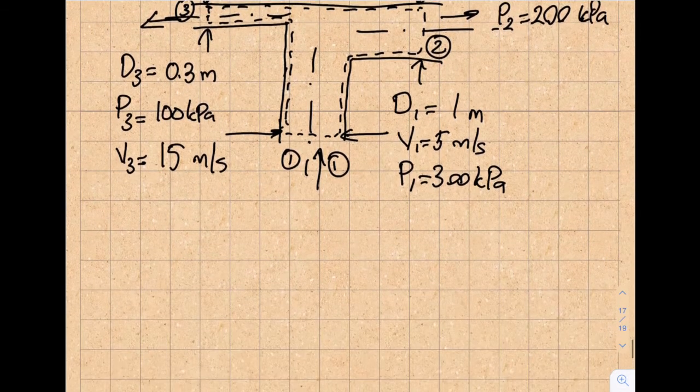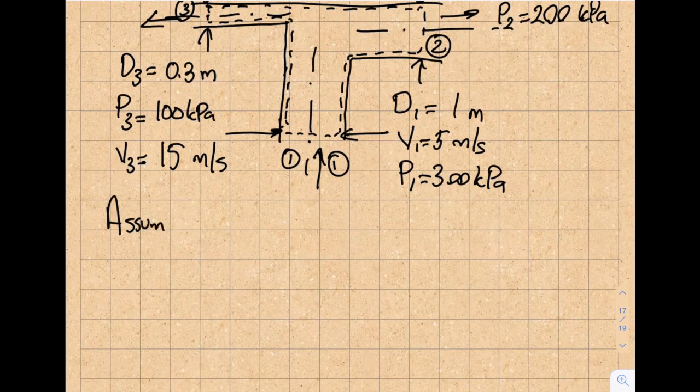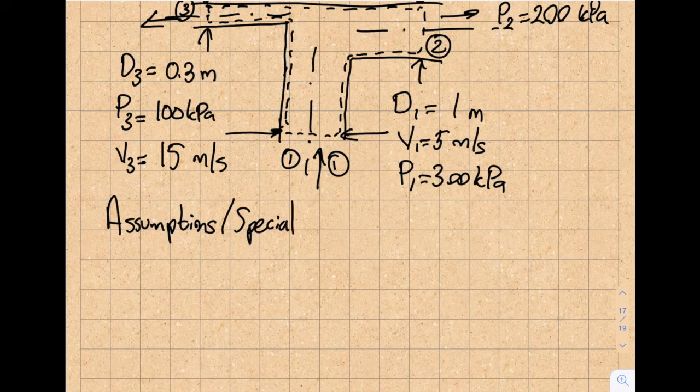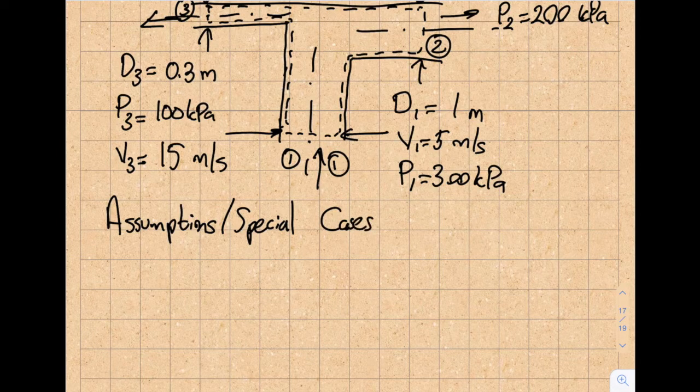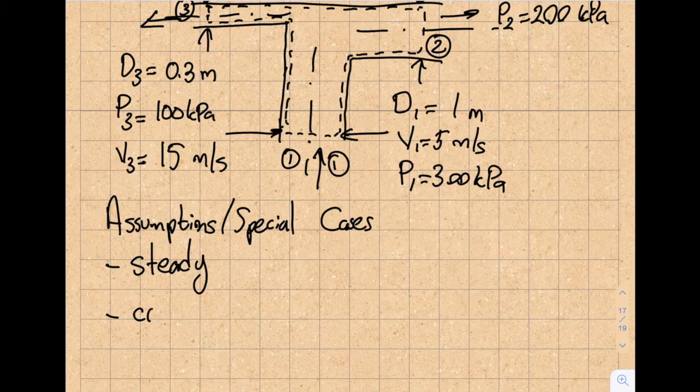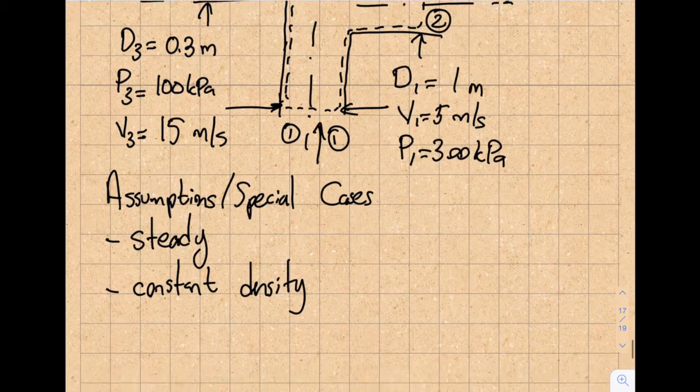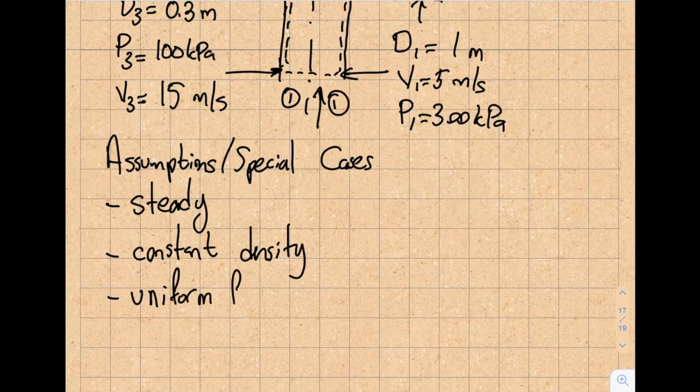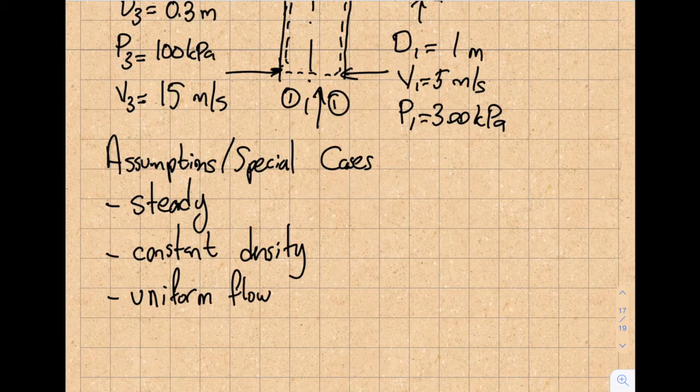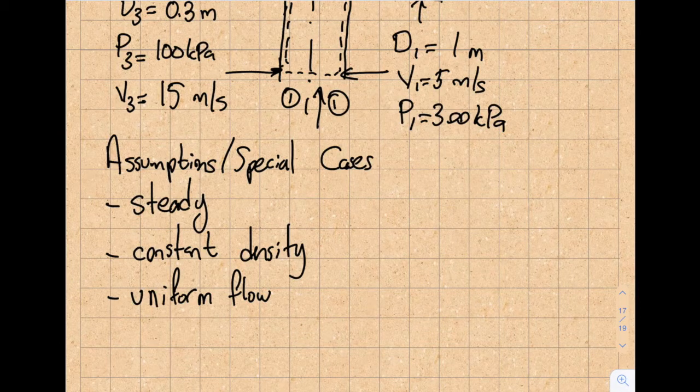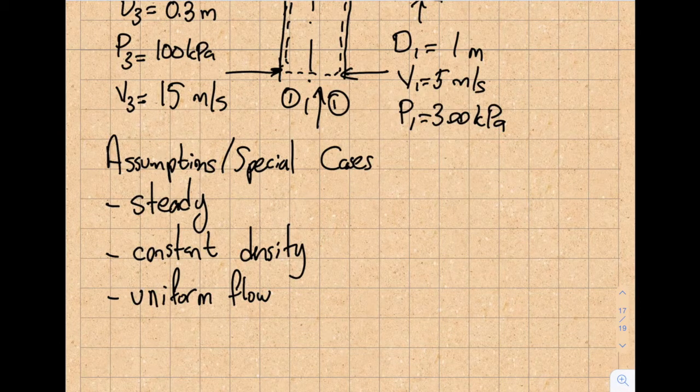The next step is to write the assumptions or special cases. Is this steady? Yes, I don't see any time dependence. Is this constant density? Yes, because it's water. And the third and last one for now is uniform flow because the velocity distribution anywhere is not supplied to me.